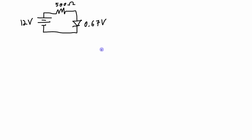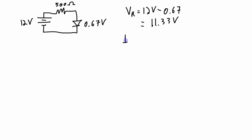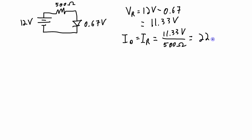Now a few quick examples using the Model 2 approximation with different circuit configurations. The first configuration is similar to before, just with different values. With a 12-volt source and a forward biased diode dropping 0.67 volts, the voltage across the resistor is 12 minus 0.67, which equals 11.33 volts. The diode current equals the resistor current: 11.33 volts divided by 500 ohms, giving 22.7 milliamps.